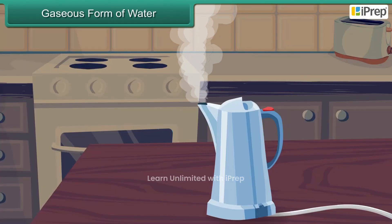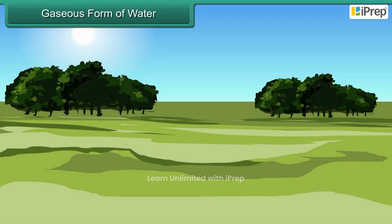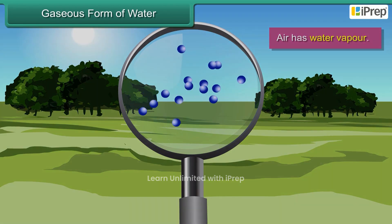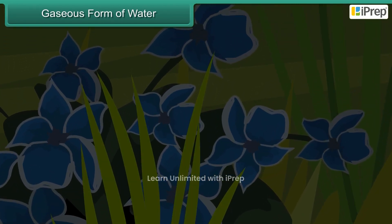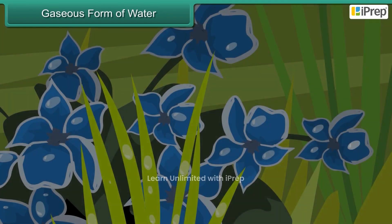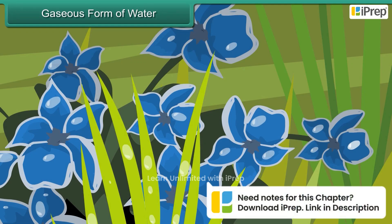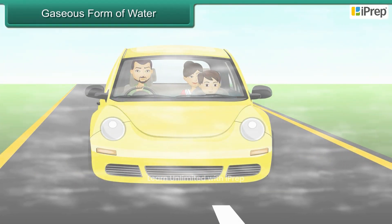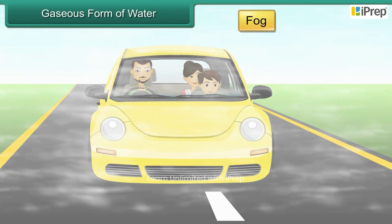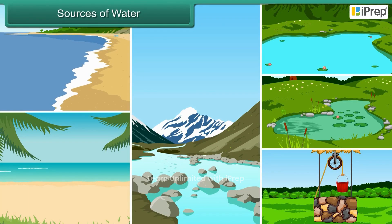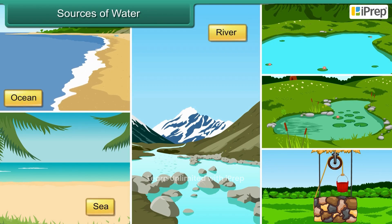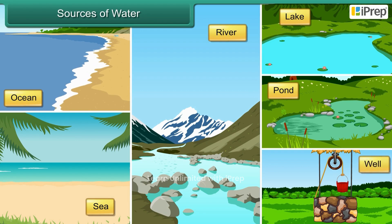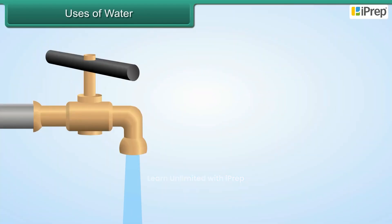Gaseous form of water: when water is heated it turns into water vapor. Water vapor is an example of water in gaseous form and is always present in the air around us. On cold nights, water vapor in the air cools down and becomes water droplets called dew. We see dew drops on flowers and leaves on cold winter mornings. Sometimes during severe cold conditions, these water droplets remain in the air and form fog.